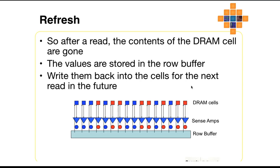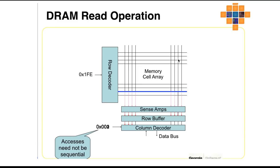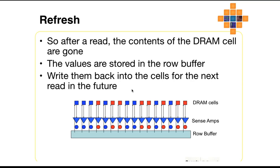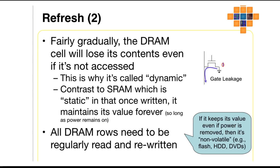DRAM needs to be refreshed periodically because DRAM uses a capacitor which loses its charge, so the content of DRAM cells can be lost. The values are stored in the row buffer. Since DRAM loses its charge, it is better to store values in the row buffer and then write them back into the cells for the next read operation. The row buffer stores values so they can be written back to the cells for future reads. Gradually the DRAM cell will lose its content even if it is not accessed.